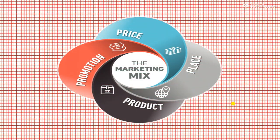Finally, we can say that marketing mix is the combination of four P's. Four P's means: first one is product mix, second one is place mix, third one is price mix, and fourth one is promotion mix. From an examination point of view, these four P's are very, very important. We will discuss each P one by one.